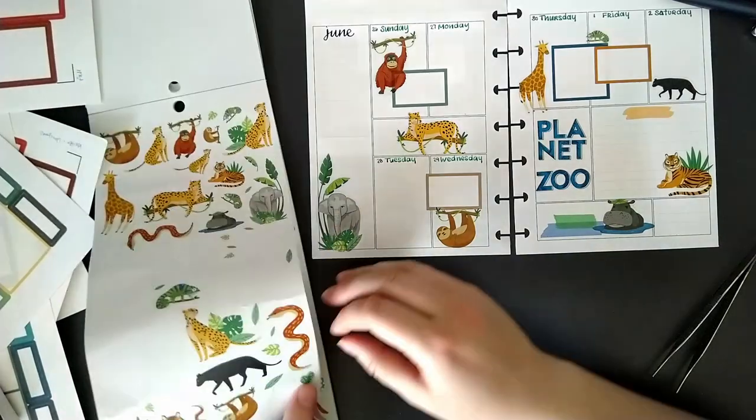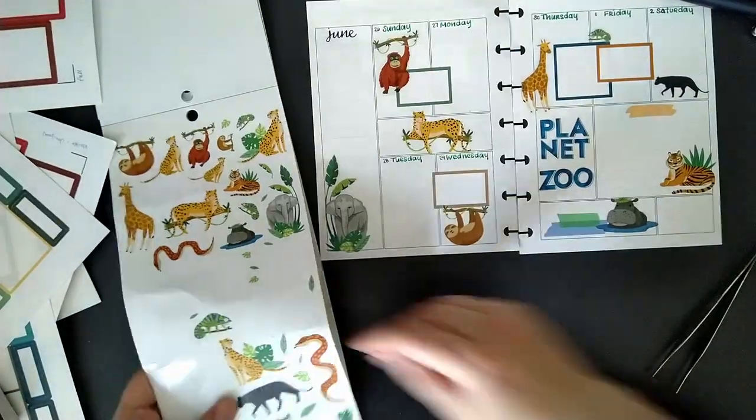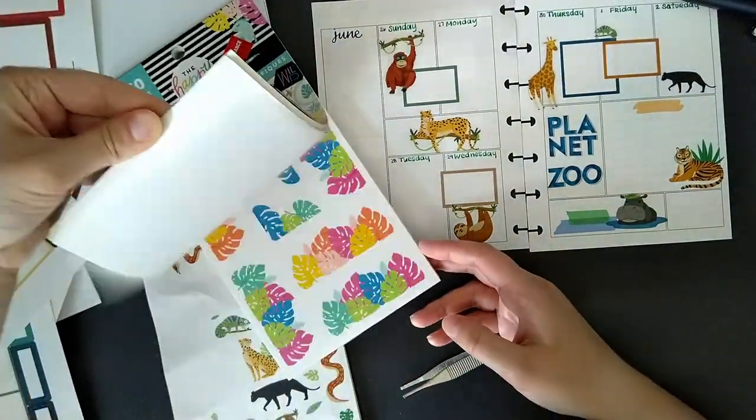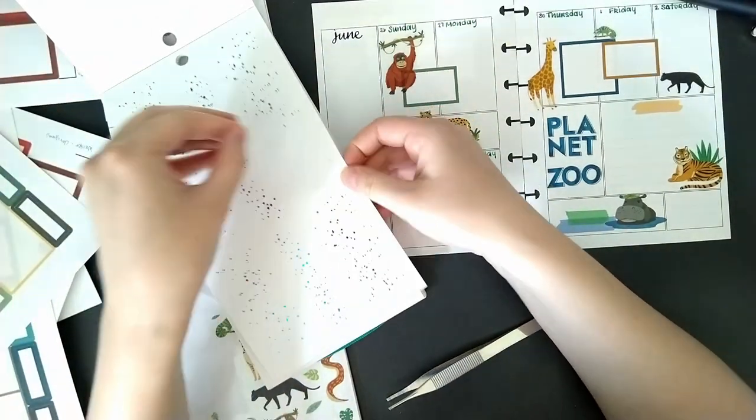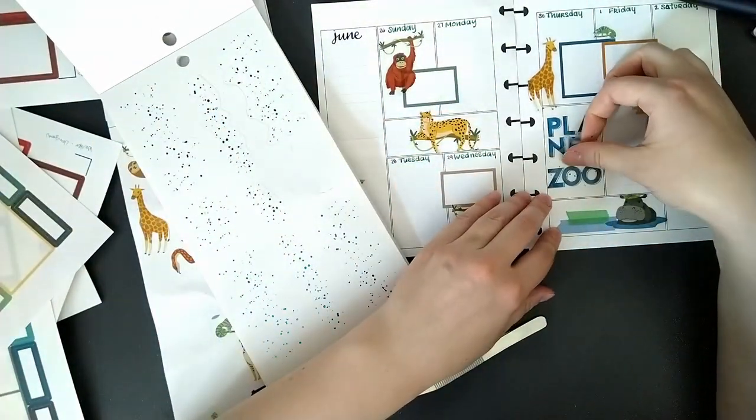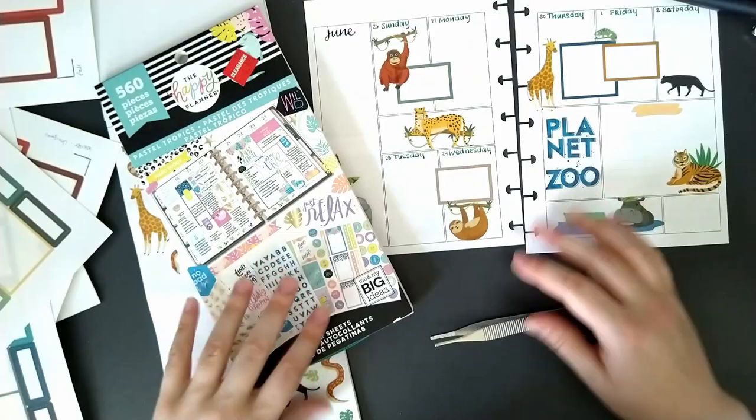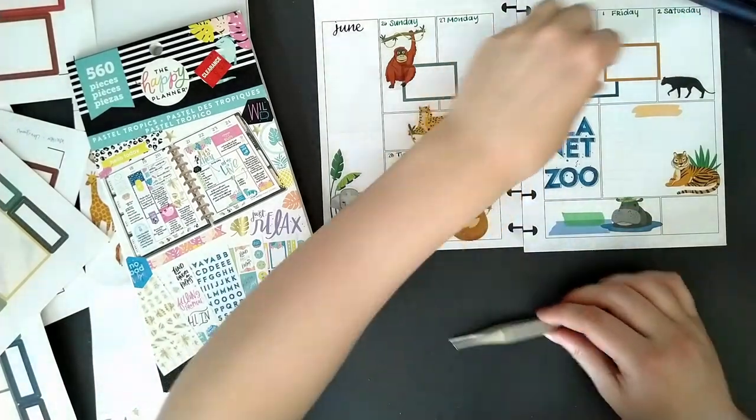And we'll put some leaf stickers there to kind of, well, actually this one has some sparkles. Just a little, little something.